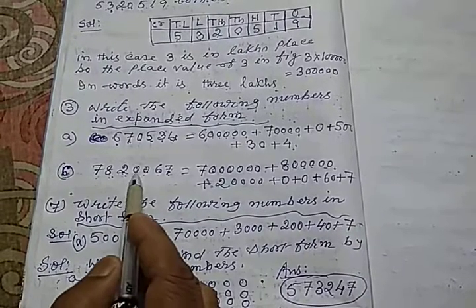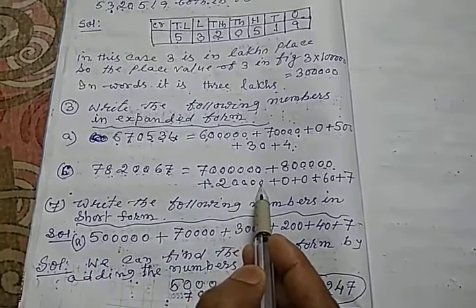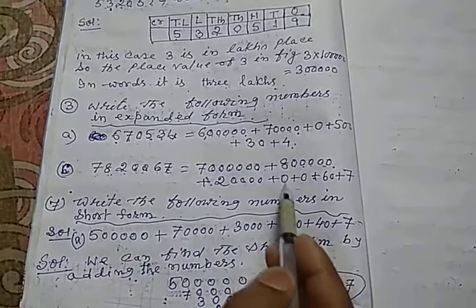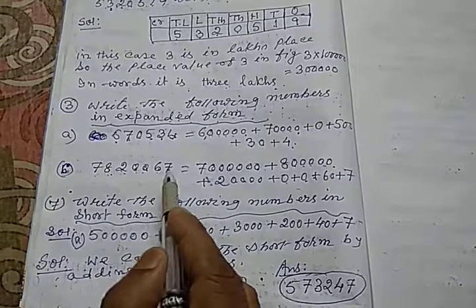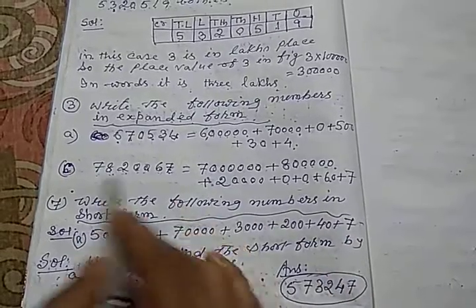Again, 2 ke baad kitna digit hai? 1, 2, 3, 4. Dekho, 2 ke baad 1, 2, 3, 4 likhu. Dekho, uske baad 2, 0 hai. That is 1000 place and 100 place mein 0, 0 likhu. Uske baad 67, that is 60 plus 7. This is the expanded form of the given number.